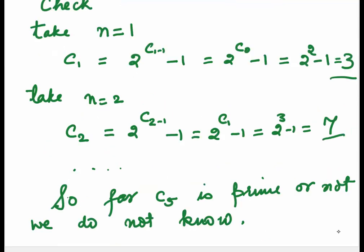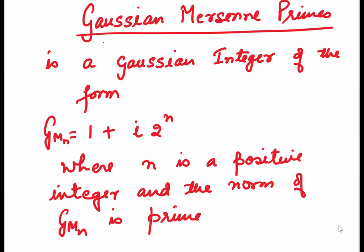As it was mentioned by Catalan, c0 to c4 are all prime. But so far we do not know whether c5 is prime or not. Let's do one more type of number. The Gaussian-Mersenne primes. Gaussian-Mersenne prime is a Gaussian integer of the form (1 + i)^(2^n). Let's denote it by GMn, where n is a positive integer and the norm of GMn is prime.